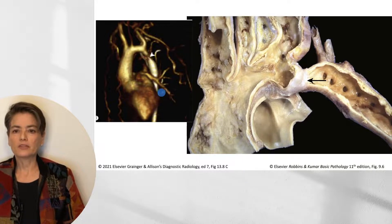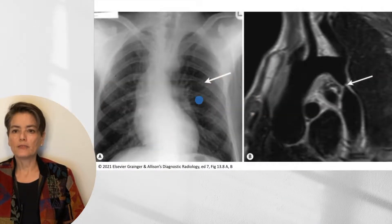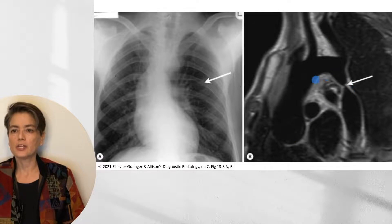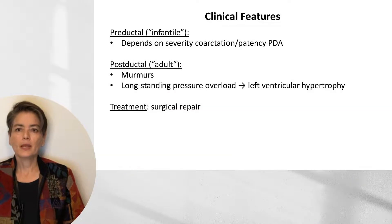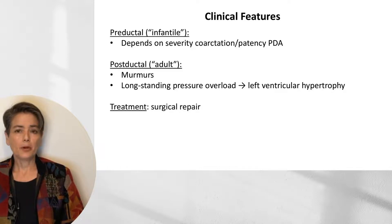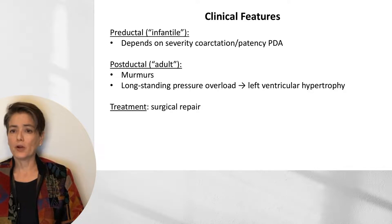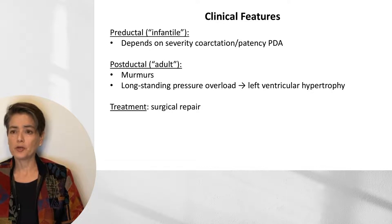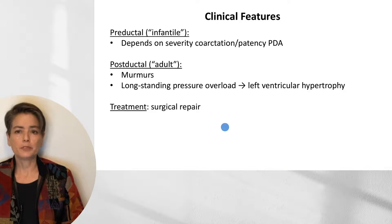The consequence of these enlarged collateral vessels can include notching of the ribs due to pressure on the bone. Clinical features for pre-ductal coarctation depend on the severity and the patency of the PDA. Post-ductal patients may present with murmurs or cardiac failure, since longstanding pressure overload leads to left ventricular hypertrophy that can end in heart failure. Treatment is surgical repair.